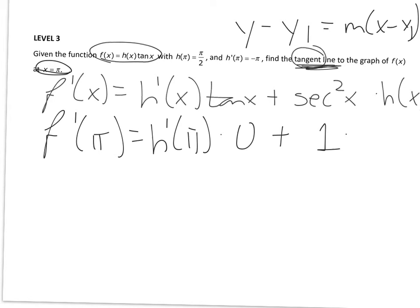So the secant squared of pi is going to be 1.